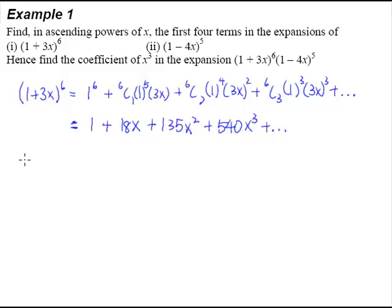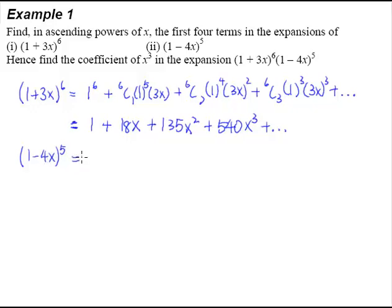Next, let us move on to the second part: expand (1 - 4x)^5. So now 1 is our first term and -4x is our second term. Take note of the negative — our second term is negative 4x, including the negative. This is the second time we're doing the expansion, so I hope we can go a little bit faster.